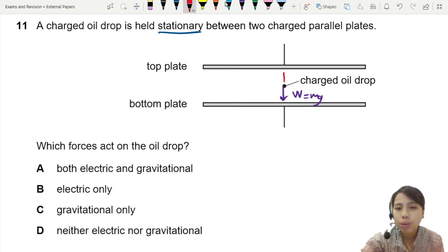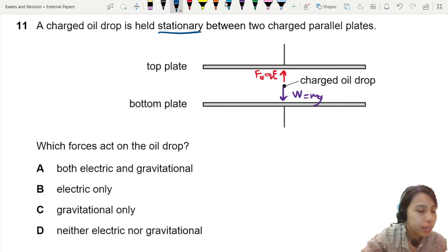going to be another force which is your electric force upwards, FE, also QE. So you just need to say electric and gravitational force. That will be A.